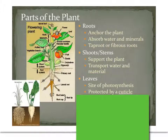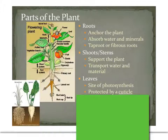As we move further up the plant, you come to the leaves. The main job of the leaves is that it's the principal site of photosynthesis. So they're going to be making sugars there to be used for energy storage later on, or making cellulose to form more cell walls and things like that.